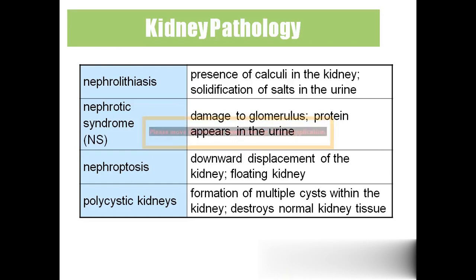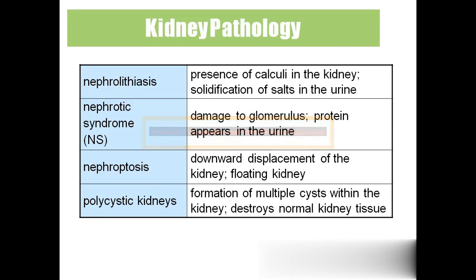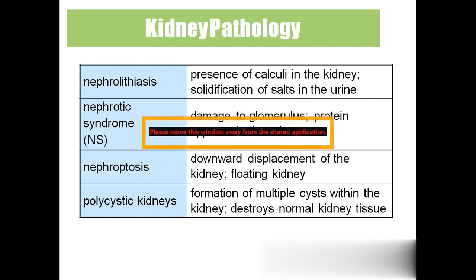Polycystic kidney is similar to PCOD (polycystic ovarian disease) but affecting the kidney. It tends to occur in people who regularly consume carbonated drinks and take very little water, keeping hydration levels low. For those people there is a chance of developing polycystic kidney, where multiple water-filled bubbles form on the kidney and destroy its normal structure.